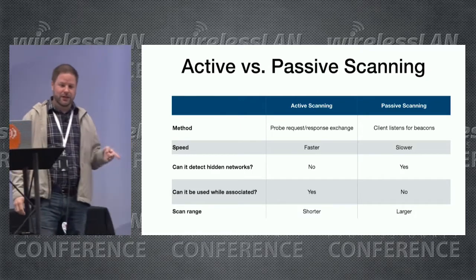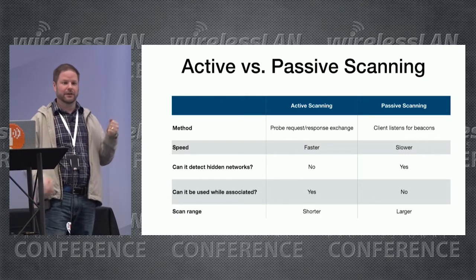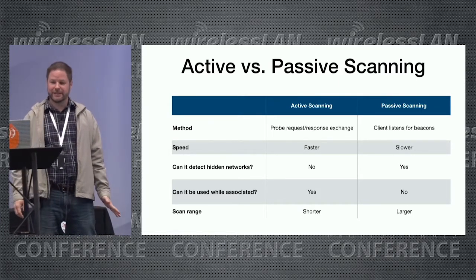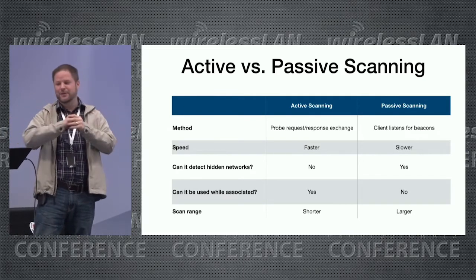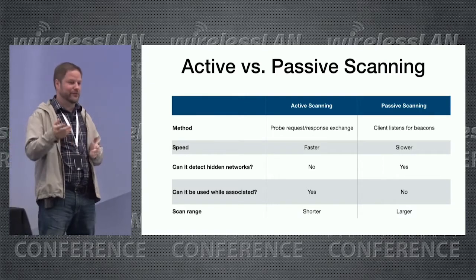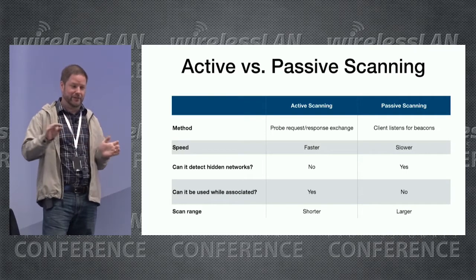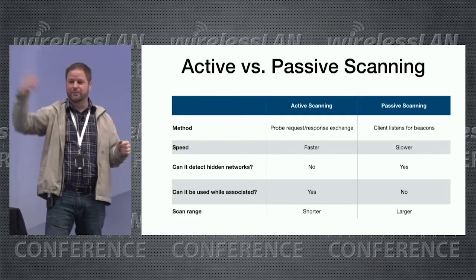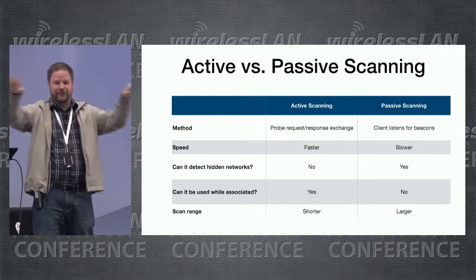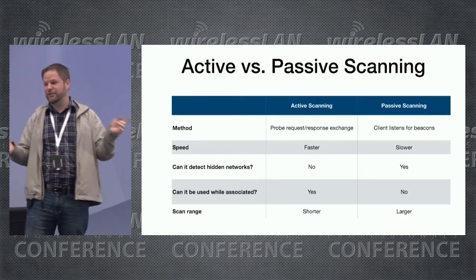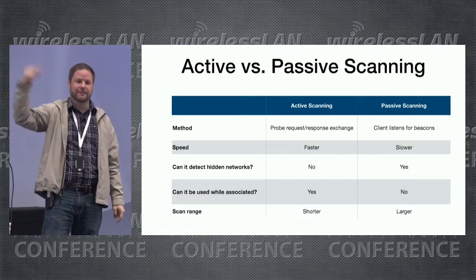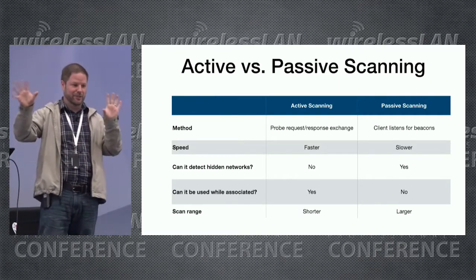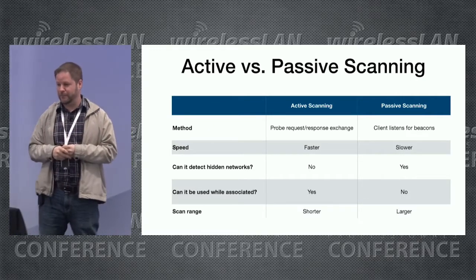Active scanning can be used while associated; passive scanning requires you to disconnect from the network and put the interface in monitor mode. The scan range for active scanning is shorter than for passive. Clients typically transmit at lower power, so a probe request might not reach farther APs. With passive scanning the AP is sending beacons at higher transmit power, plus the AP has better antennas — so there's a mismatch in the number of networks found depending on which method you use.